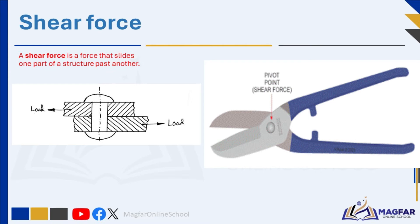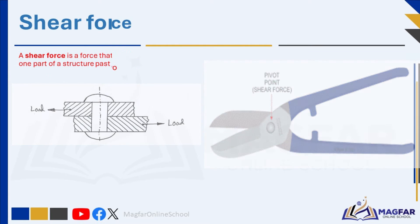When you cut paper with scissors, the blades break the paper. One blade forces the paper upwards, while the other blade forces the paper downwards.